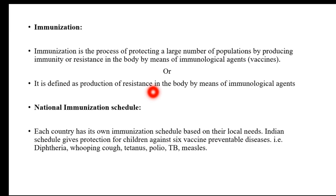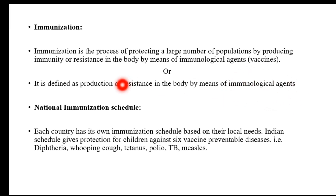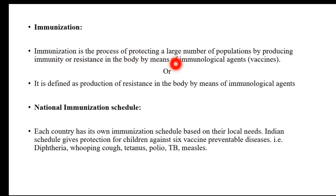First we need to understand what immunization or vaccination is. Immunization is the production of resistance in the body by means of immunological agents — vaccines, sera, antitoxins, anti-serum — through which one can get protection from various diseases. It is the process of protecting a large number of the population by producing immunity, that is the resistance of the body to fight against various infections or to resist the effect of invasion of pathogens, which we have seen in Part 2.